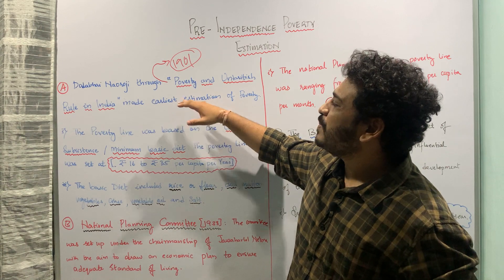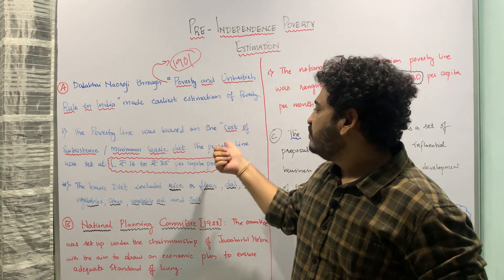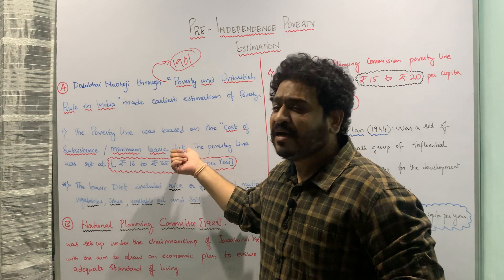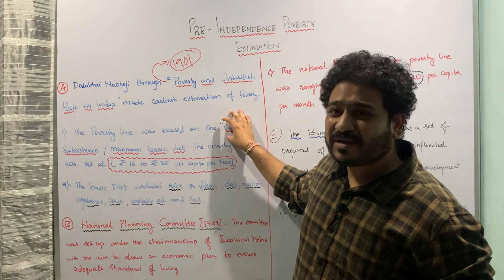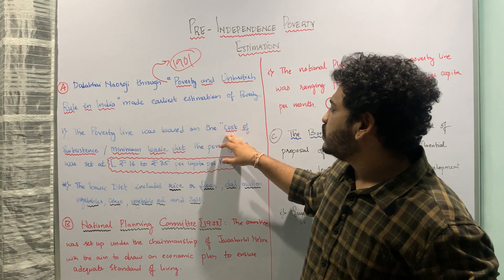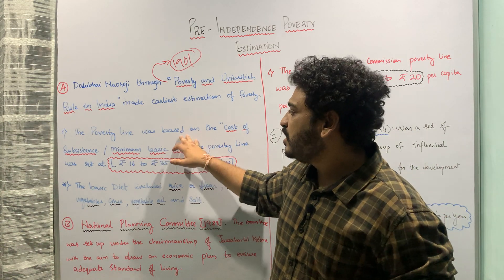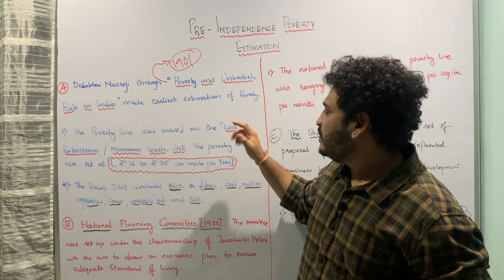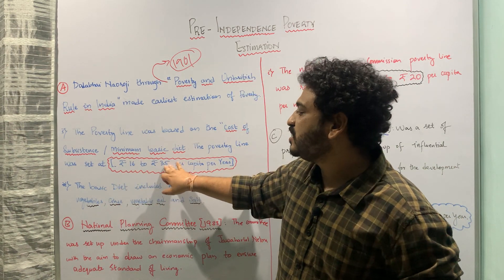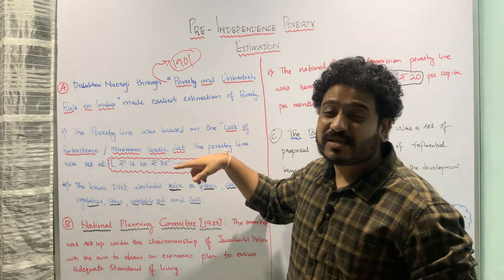The poverty line in this research was based on two different things: first is called the cost of subsistence, and the other is called the minimum basic diet. One is talking about the monetary aspect and the other is about food or commodity per se. When looking at cost of subsistence, the poverty line was set at rupees 16 to rupees 35 per capita per year.